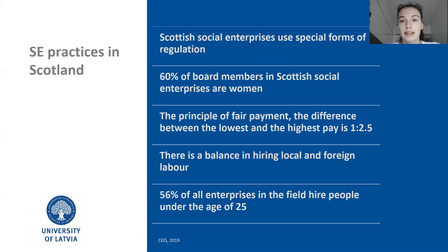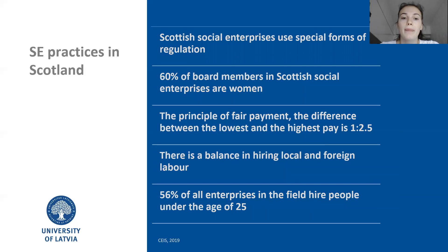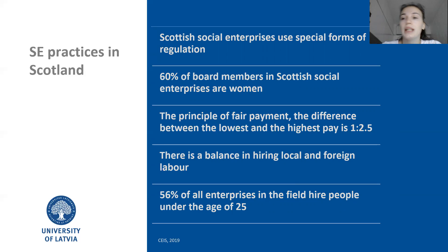What are the social entrepreneurship practices used by Scotland in order to achieve such great results? As already mentioned for the UK in general, Scottish social enterprises use special forms of regulation and legal structures which encourage good management. An interesting fact is that more than 60% of board members in Scottish social enterprises are women, and this number is growing. The output here is that leadership opportunities in the sector should be equal for everyone. The third point of a well-functioning sector is the principle of fair payment. In Scotland, the difference between the lowest and the highest pay is only 1 to 2.5, which is definitely not a big gap, and this difference has been constant since 2015.